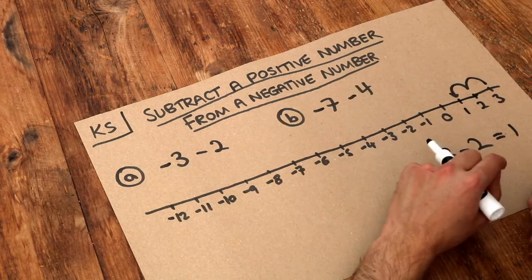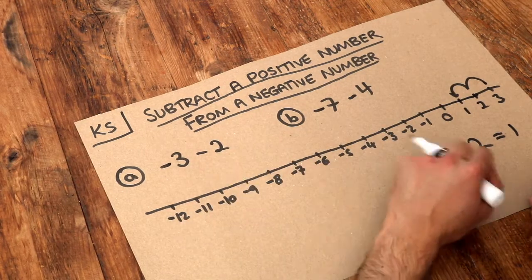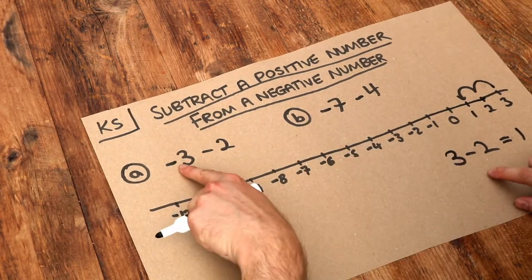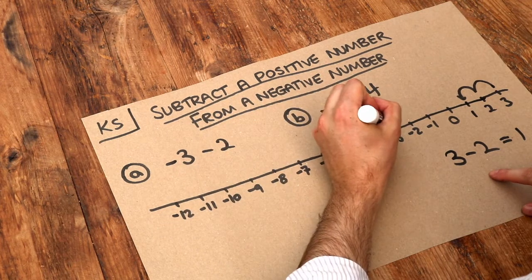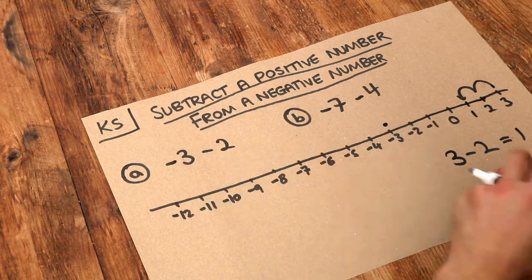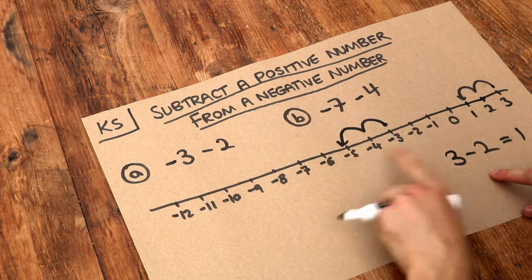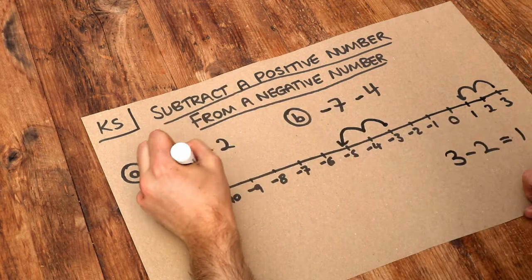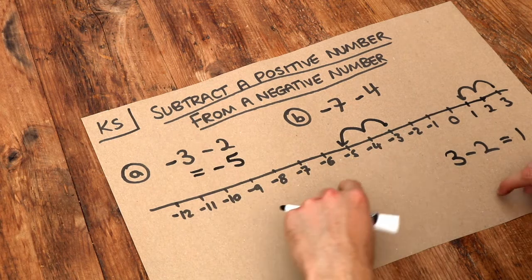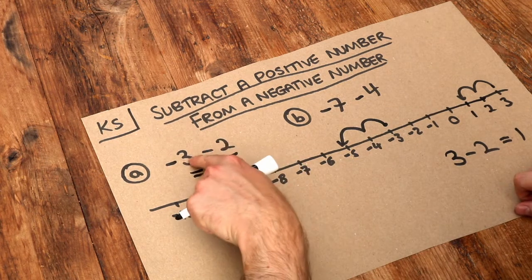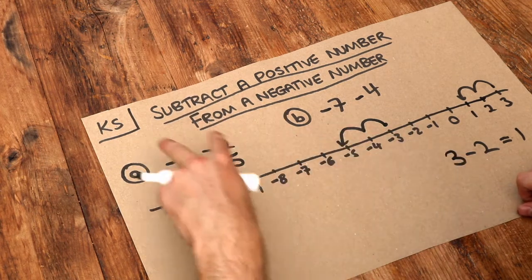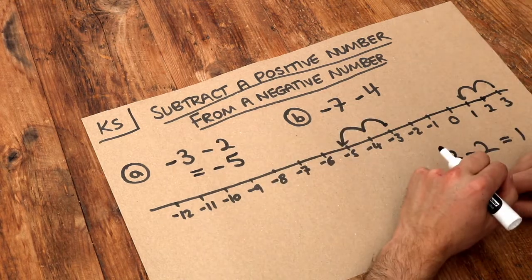And the principle is exactly the same when you subtract a positive number from a negative number. So if I'm at minus 3 here and I subtract 2, that means I'm moving down 2 on the number line, and you can see I end up at minus 5. So it's effectively equivalent to adding the two numbers, like 3 plus 2 is 5, except we're in the negative world.